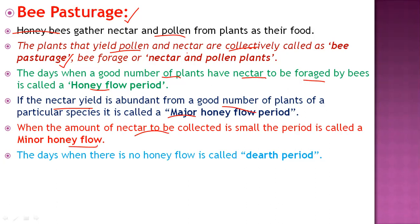Another important terminology is the dearth period — not 'dead', but 'dearth' period. These are the days when there is no honey flow, meaning there are no sufficient plants to provide nectar.